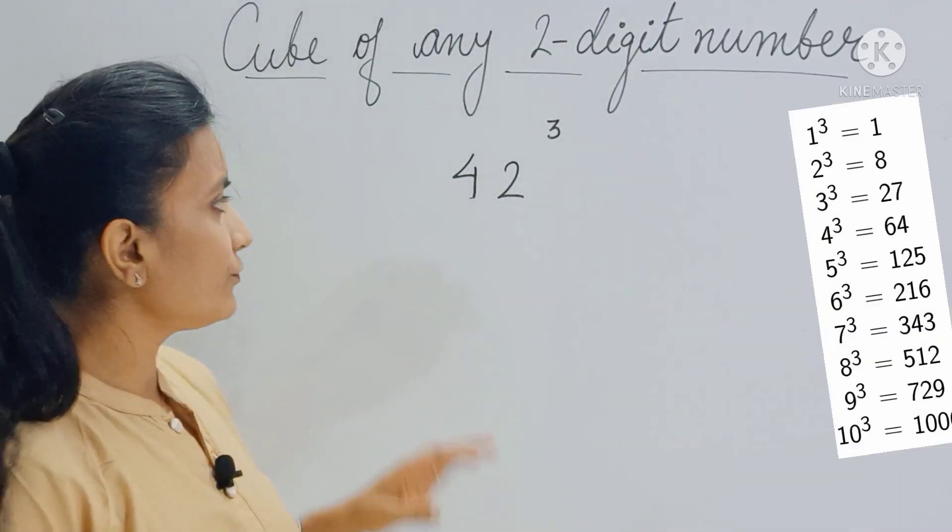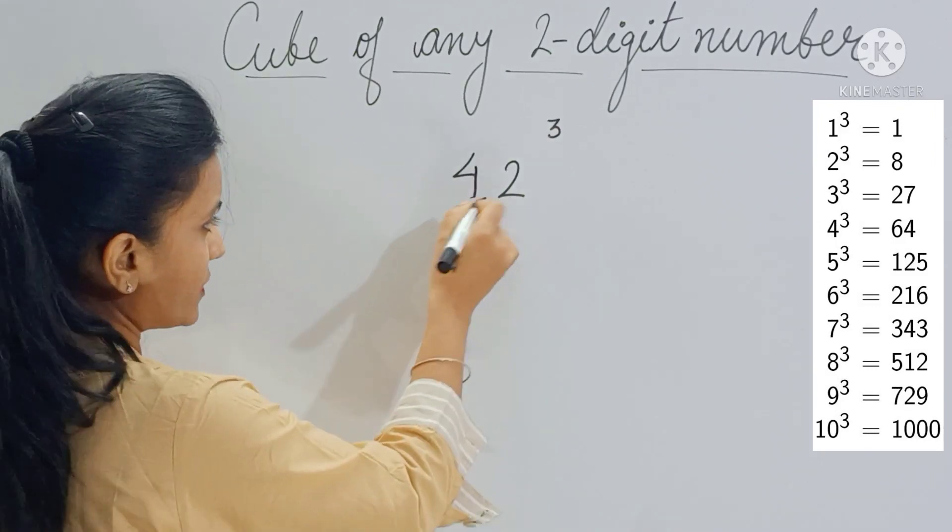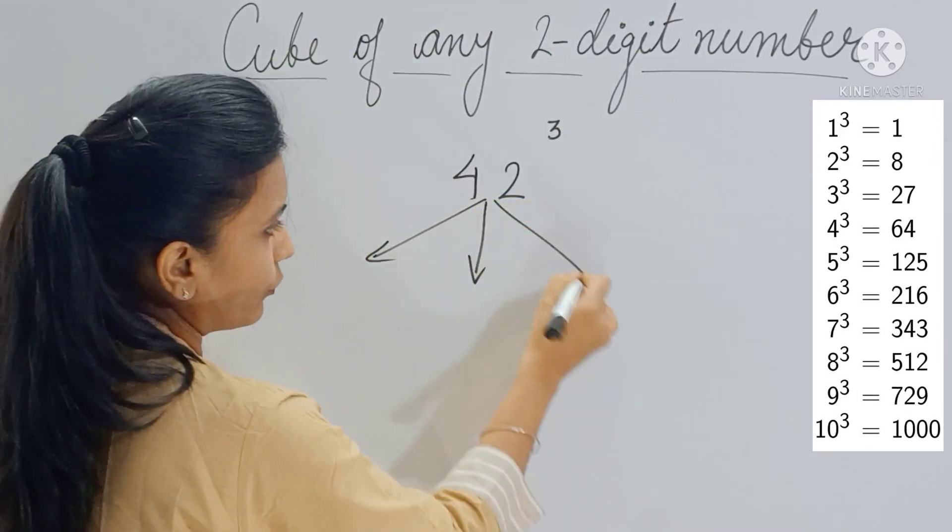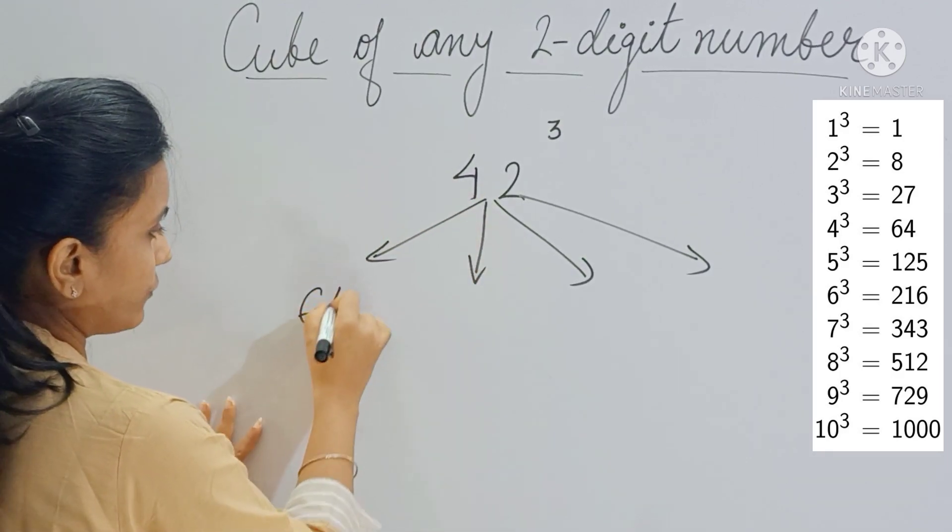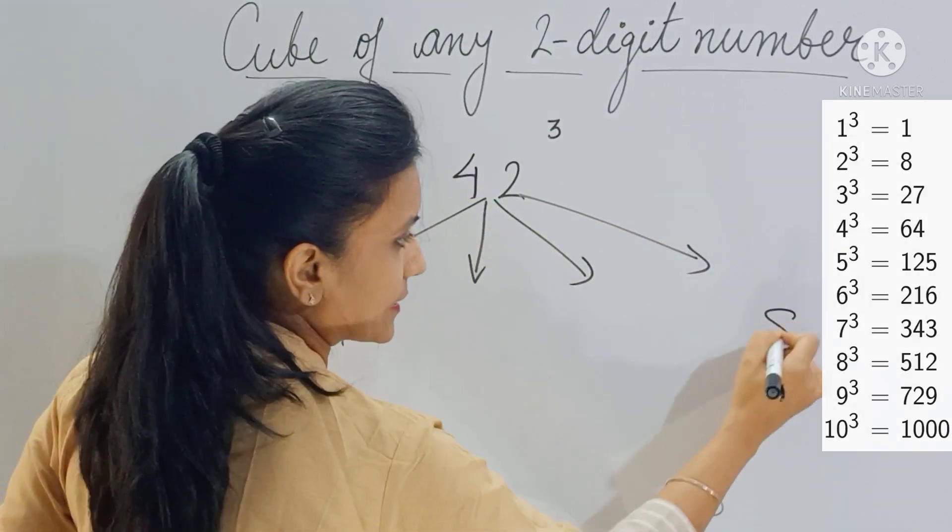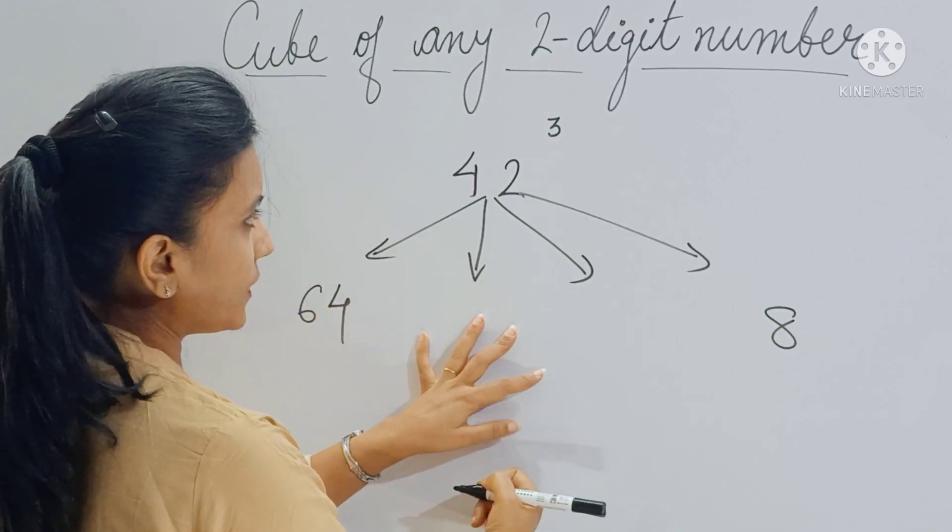Now let's find the cube of 42. So first we will find all the four parts of this answer: 4 cube is 64, 2 cube is 8. Now to find the middle two parts, first you have to multiply these three digits.